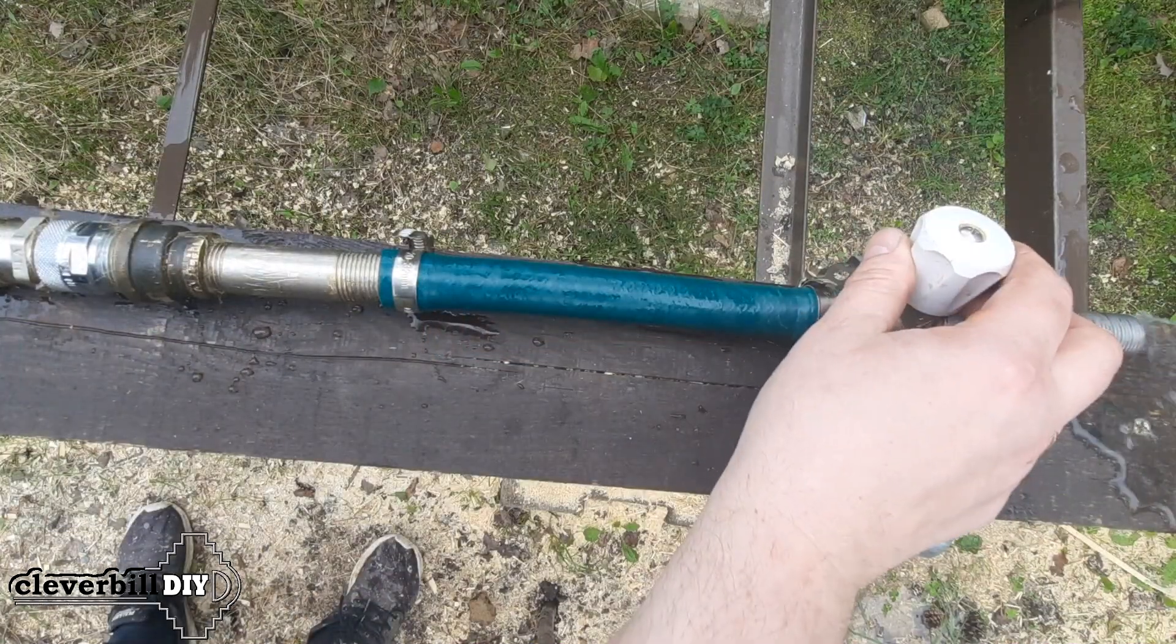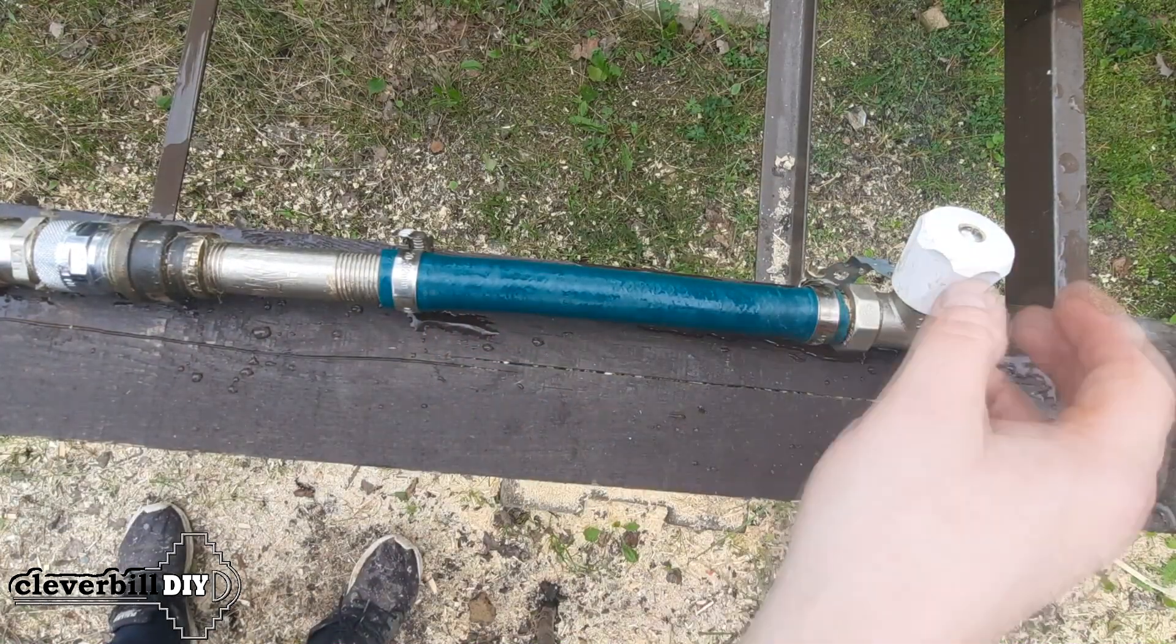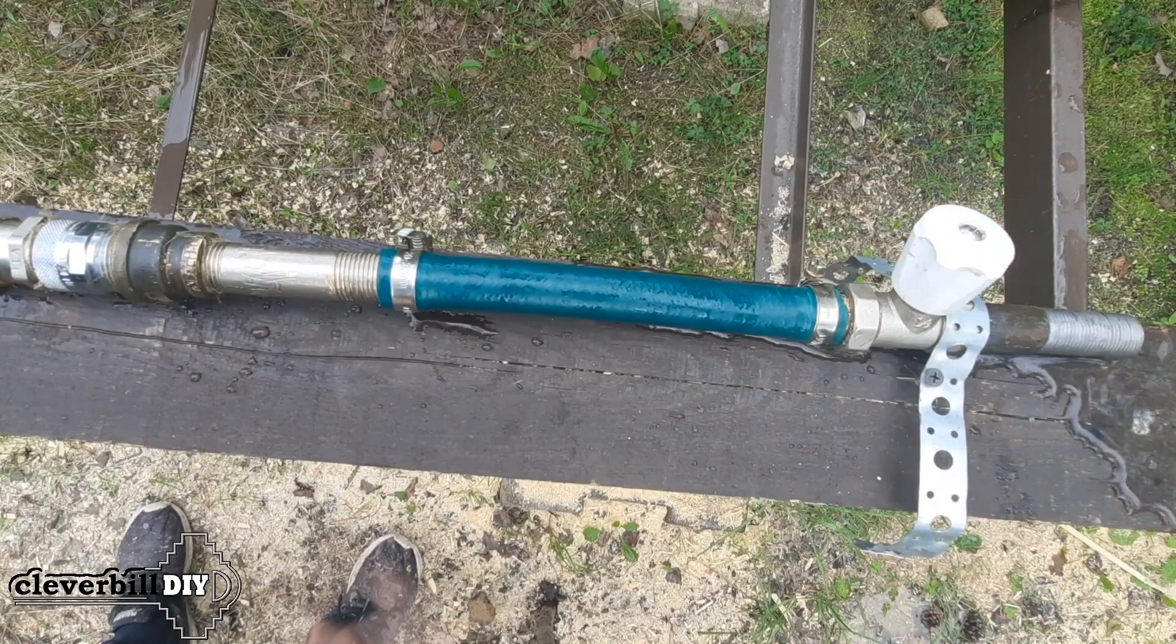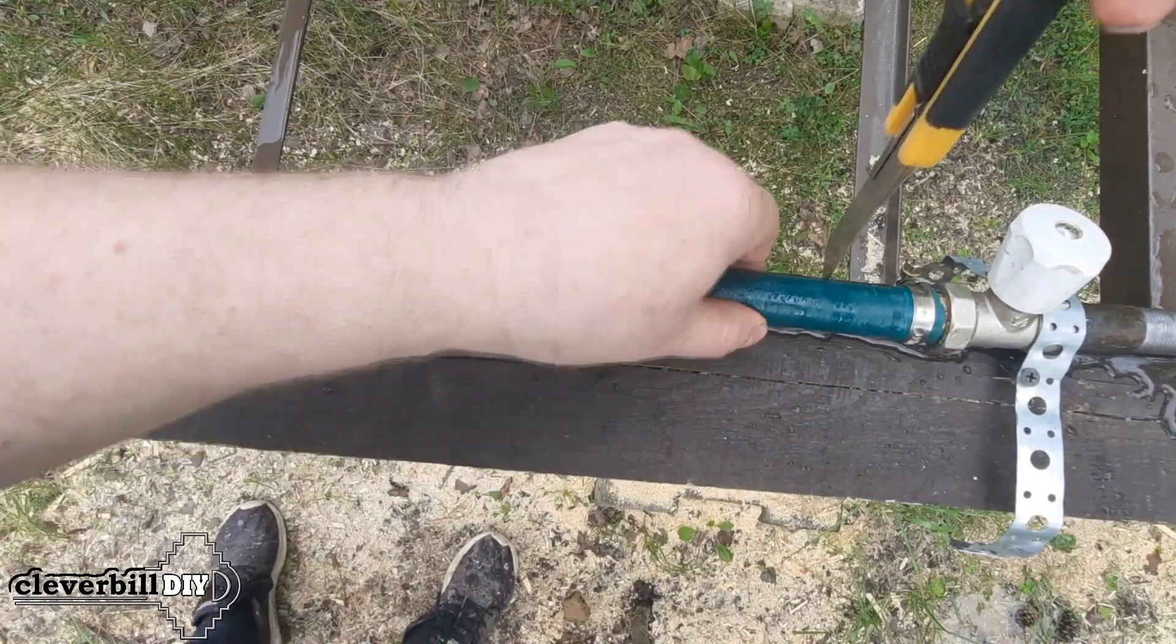Now, in order to create the situation of a torn hose as close as possible, I will simply try to cut it with a knife. First, I make a small incision.